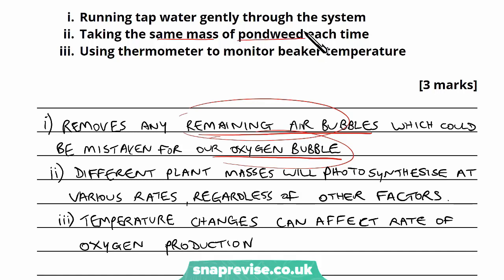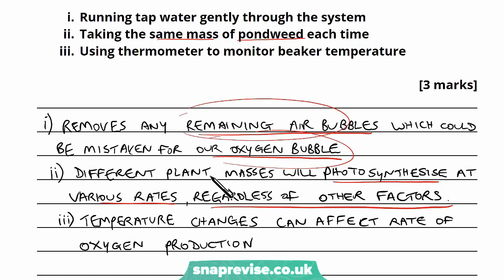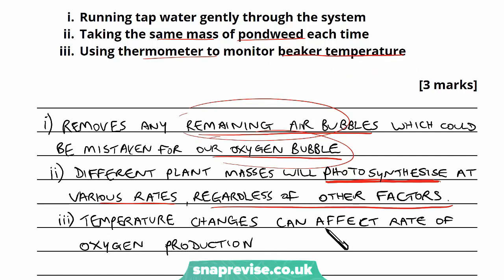Part two was taking the same mass of pondweed for each experiment, regardless of the CO2 concentration used. Different plant masses will photosynthesize at different rates — a big lump of pondweed compared to a tiny bit will photosynthesize differently regardless of how much CO2 there is. We want to investigate how CO2 concentration affects oxygen production, not how plant mass does. Part three: using a thermometer to monitor beaker temperature. Temperature is a factor that can affect the rate of oxygen production, so we have to keep it the same.